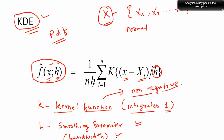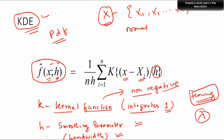H is also called the bandwidth. The smoothing parameter determines the smoothness of the curve. People familiar with machine learning models know tuning parameters or smoothing parameters — similarly, we use lambda as smoothing parameters in some models. H will determine the smoothness of your PDF — how smooth it is. We'll see an example to understand that.